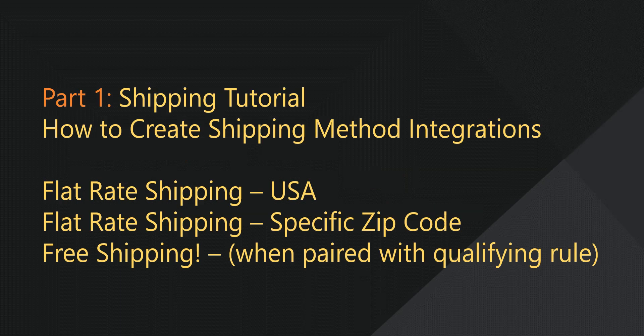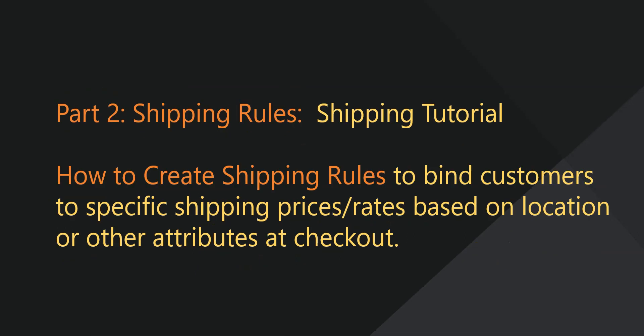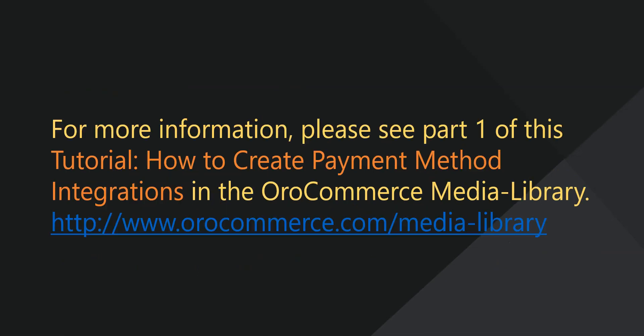In part one of our video tutorial demonstration, we created three shipping method integrations: one for customers inside the USA, another for customers in a specific zip code, and a free shipping integration. Now it's time to create shipping rules to bind our customers to specific shipping rates based on their location or other attributes at checkout. For more information, please see part one of this tutorial in the Media Library.